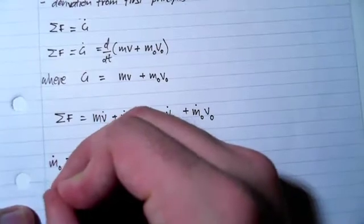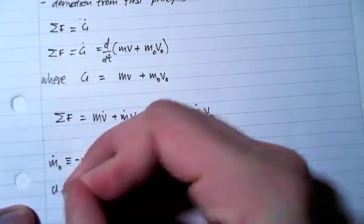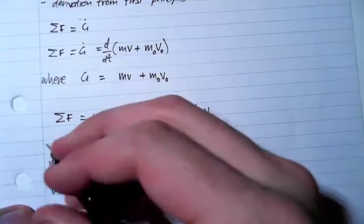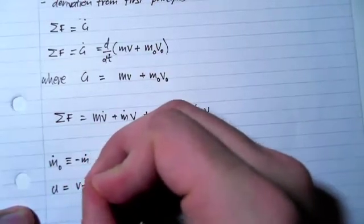u represents the relative velocity of the mass, which is v minus v₀.